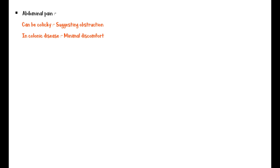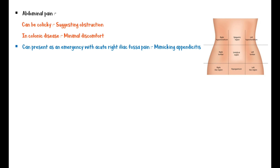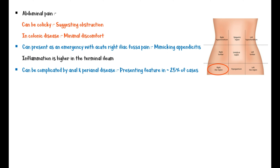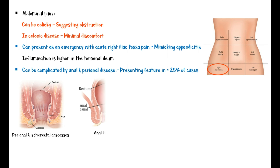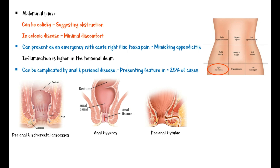Abdominal pain can be colicky, suggesting obstruction, and usually does not have any special characteristics. Sometimes in colonic disease only minimal discomfort may be present. Crohn's disease can also present as an emergency with acute right iliac fossa pain mimicking appendicitis, where inflammation is higher in the terminal ileum. Crohn's disease can be complicated by other anal and perianal diseases, presenting in about 25% of cases, including perianal and ischiorectal abscesses, anal fissures, perianal fistulae, and hemorrhoids.